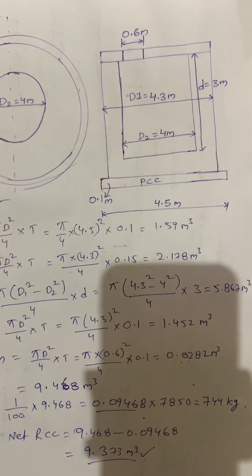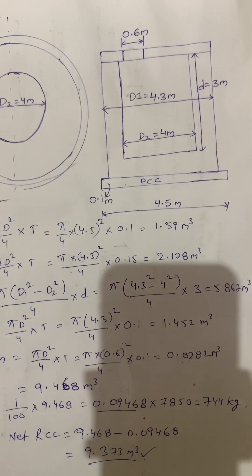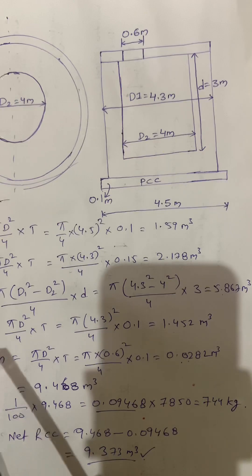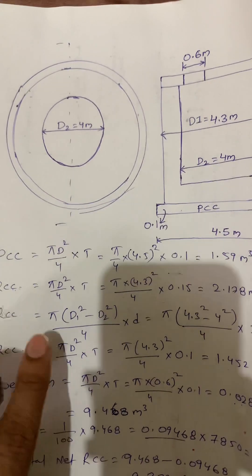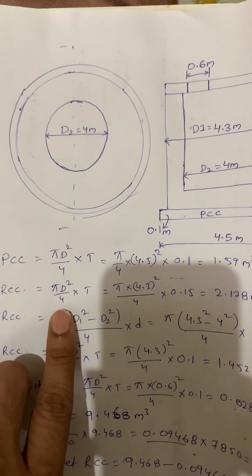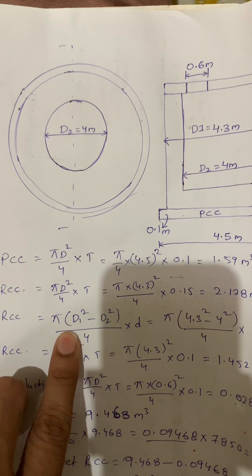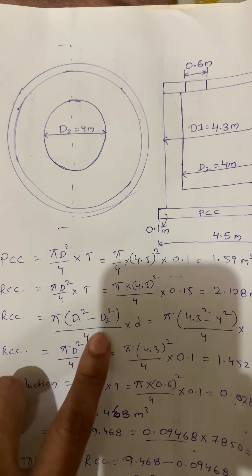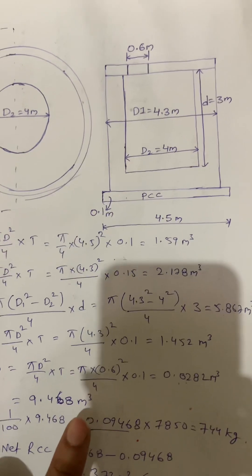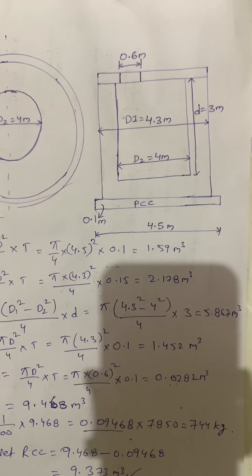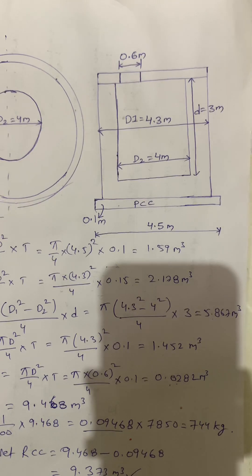This is how you calculate circular water tank concrete quantity. The key is to remember all the formulas — the circular area formula π D² / 4 and the hollow section formula π × (D1² − D2²) / 4 × D. With these formulas it is easy to calculate concrete quantity. If you like this video, please like, share, and subscribe. Thank you so much for watching.